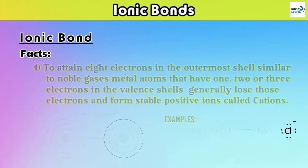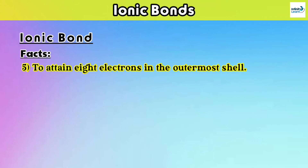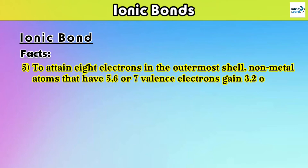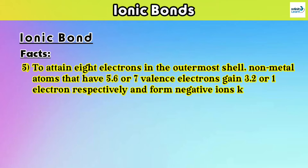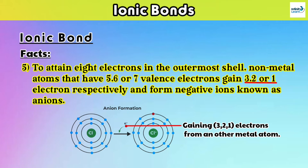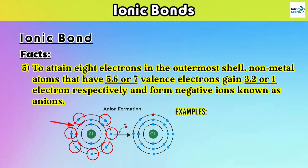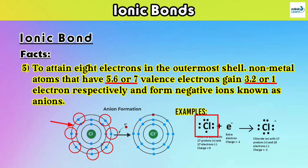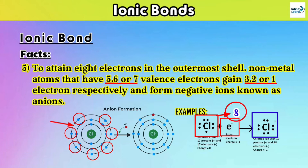Fact number five: to attain eight electrons in the outermost shell, non-metal atoms that have five, six, or seven valence electrons gain three, two, or one electron respectively, and form negative ions known as anions. For example, chlorine has seven valence electrons in its outermost shell, so it needs one more electron to complete its octet. After gaining that one electron, it becomes a stable negative ion called an anion.